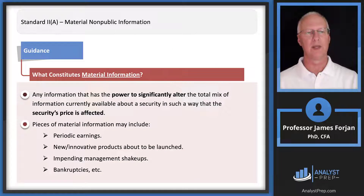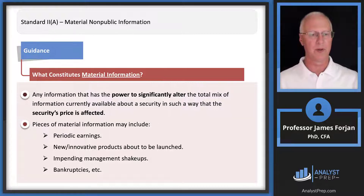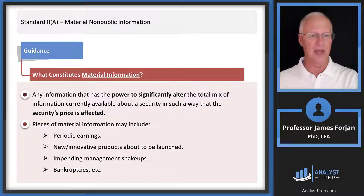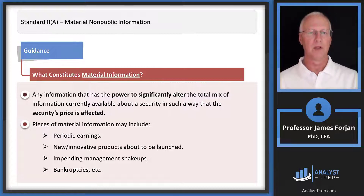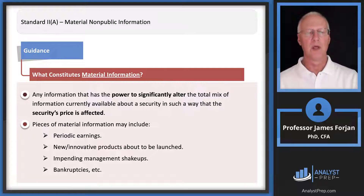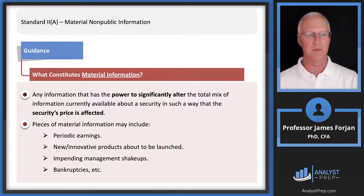What constitutes material information? It may include periodic earnings, products, management shakeups, bankruptcies — almost anything you can find in financial statements, management discussion, or the Wall Street Journal. The key embedded concept at the top is the power to significantly alter the securities price. If a piece of information can impact price, it qualifies as material.